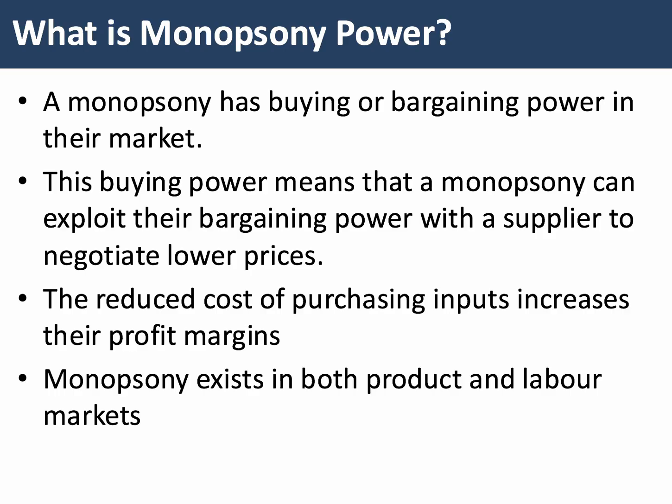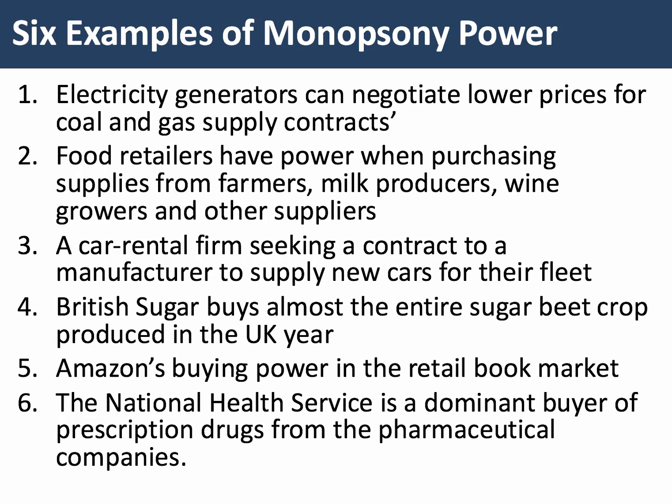We find monopsony in both product and labor markets, but in our example today we're just going to focus on product markets. In the power sector, the big electricity generators can negotiate cheaper prices for their coal or gas supply contracts. The big food retailers have enormous buying power when purchasing their supplies from farmers, milk producers, and wine growers. The likes of Tesco, Sainsbury, Walmart, and even deep discounters such as Aldi and Lidl have oligopsony power because they are able to buy more cheaply from businesses at earlier stages of the supply chain.